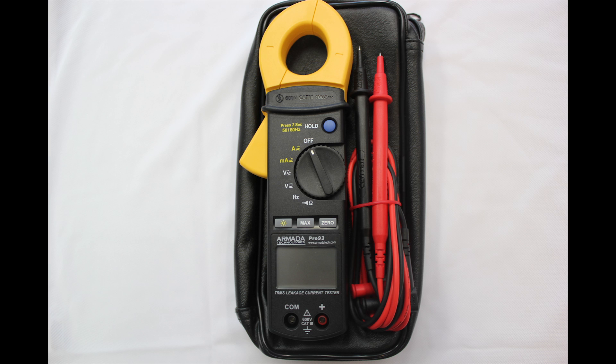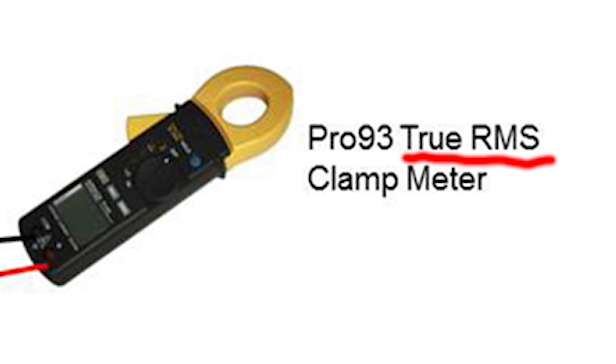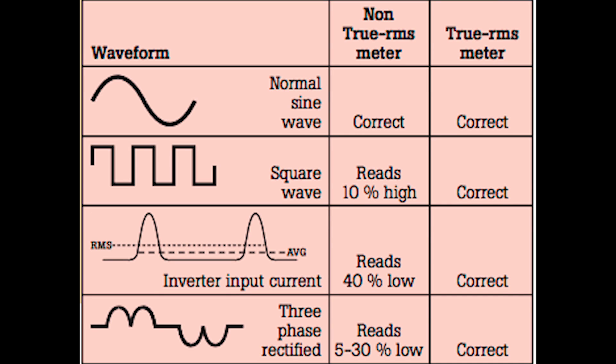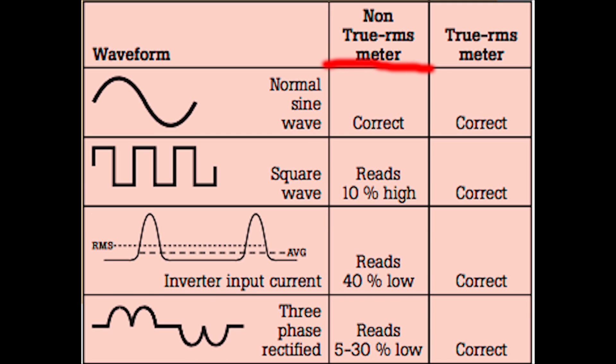In addition, you want to have true RMS capability on your multimeter. True RMS means that the meter is accurate 100% of the time no matter what your AC sine wave looks like—square wave, sine wave, distorted wave, it doesn't make a difference. It's going to be accurate all the time. If you just get an averaging milliamp clamp meter, it may or may not be accurate. It won't be off by tremendous amounts, but you want the most accurate meter you can get, and they're not that much more expensive to get a true RMS version.